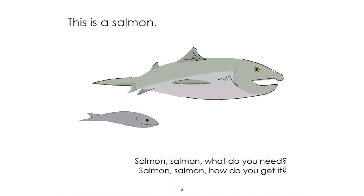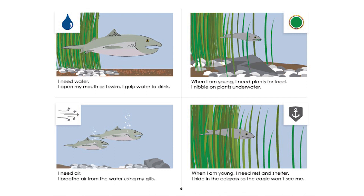Turn the page down. Look at the four icons again — one means water, one means food and energy. The colored circle has changed — I wonder what that means. The arrows represent air, and the shield with an anchor means shelter and protection. The salmon says: I need water — I open my mouth as I swim and gulp water to drink. When I'm young I need plants for food — I nibble on plants underwater. I need air — I breathe air from the water using my gills. For protection when I'm young, I hide in the eelgrass so that the eagle won't see me.